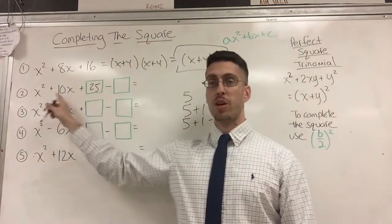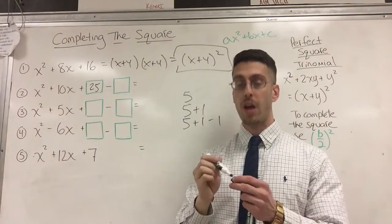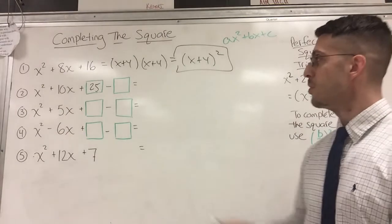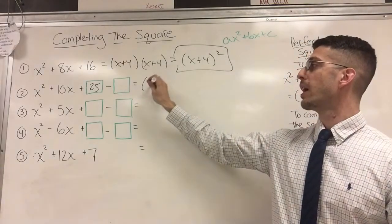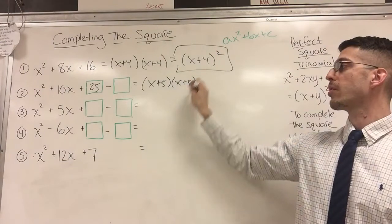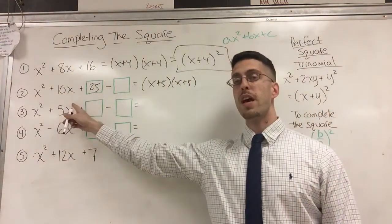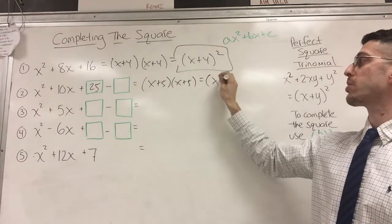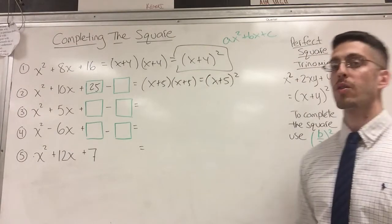Look at this thing. Trinomial, perfect square trinomial. Factor it. What would the factors look like? It would look like (x + 5)(x + 5), right? This times this gives you that. But don't write it twice. Just write it once. Write it as (x + 5)².